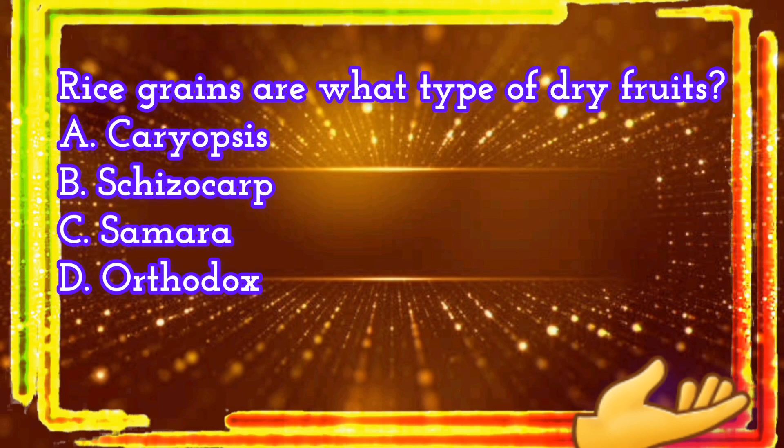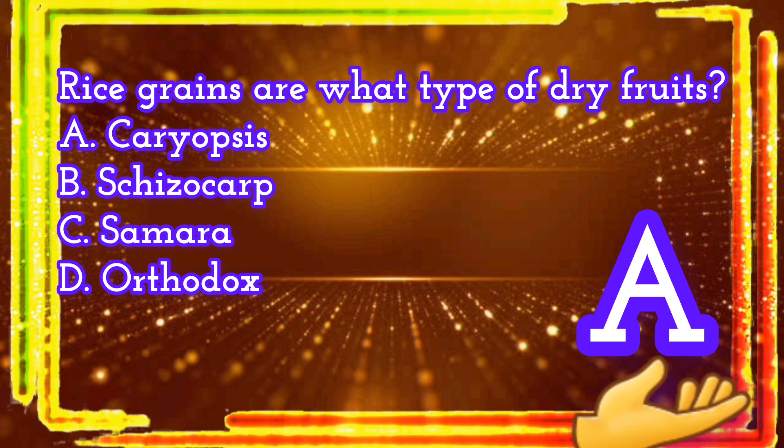Rice grains are what type of dry fruits? A. Caryopsis. B. Schizocarp. C. Samara. D. Orthodox. The correct answer is letter A. Caryopsis.